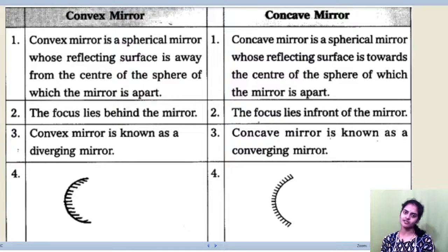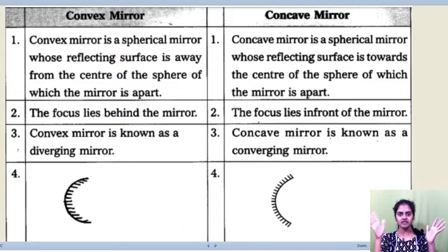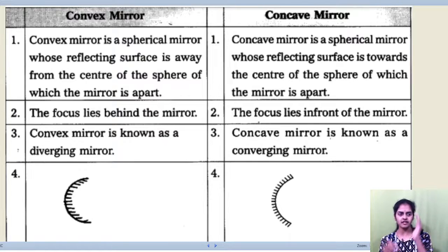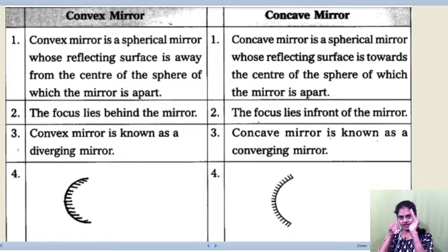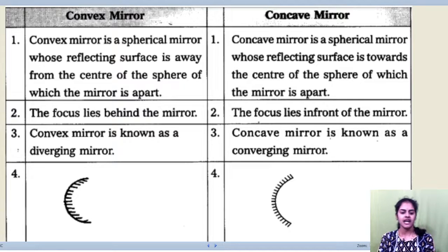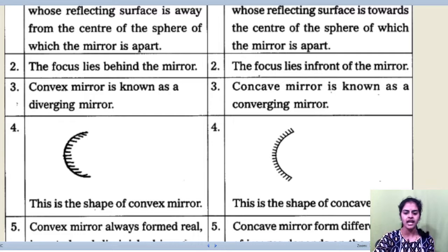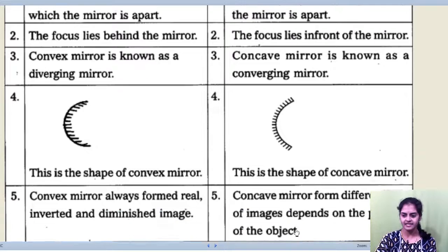A convex mirror is also known as a diverging mirror because all the rays coming in diverge — they do not converge at a point. The normals also diverge. Whereas a concave mirror is a converging mirror; all the rays hitting it meet at a point. You can see the pictures of both mirrors in point number 4 on screen.